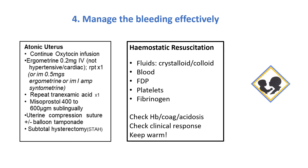Managing the bleeding effectively requires that you know how to treat uterine atony, usually with oxytocin infusions. You may need to add ergometrine, which is a relative contraindication in the cardiac or hypertensive patient. You can repeat your tranexamic acid once, give misoprostol 400 to 600 micrograms maximum sublingually, and then surgical measures like uterine compression, balloon tamponade, and even subtotal hysterectomy. When dealing with trauma like uterine tear or rupture, or uterine atony, the coagulopathy usually develops late — after three or four liters of blood loss.